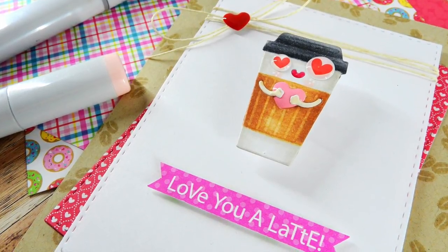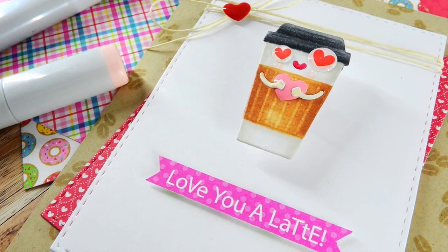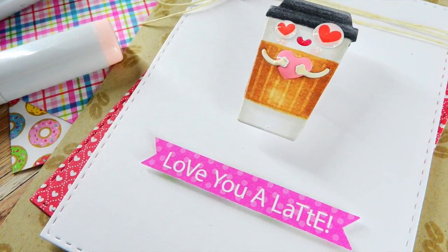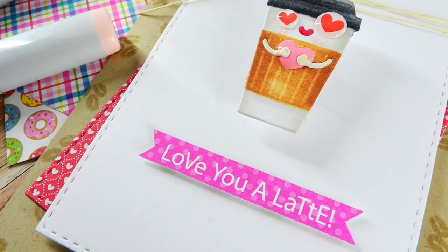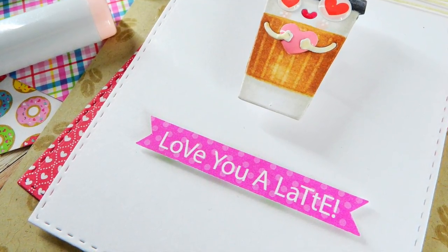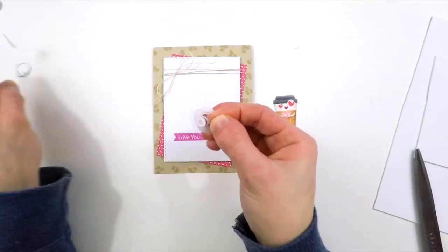My sentiment is also from the Doodlebug Paper Collection. I found that in one of the little sentiment collage sheets, and I just ended up trimming that out with some scissors and then cut some banner ends on each side to make it look like a banner, and it works perfectly with this mug. I love latte, so I know I would love to get a card like this.